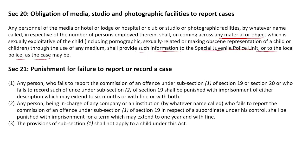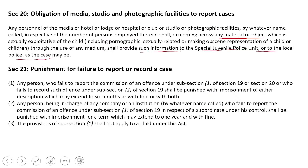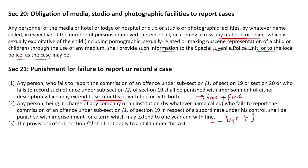Section 21 deals with punishment for failure to report or record a case. If any person fails to report or record such offense under subsection 1 or 2 of Section 19, the punishment is imprisonment which may extend up to six months plus fine. Any person being in charge of any company or institution who fails to report the commission of an offense under subsection 1 of Section 19 shall be punished with imprisonment which may extend to one year plus fine. For ordinary persons it is six months; for a person in charge it is one year.